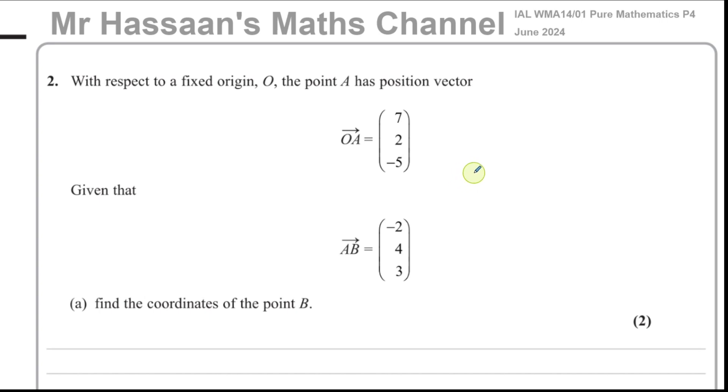We're told in this question about this vector. With respect to a fixed origin, the point A has position vector OA equals 7, 2, negative 5. Given that AB is the vector negative 2, 4, 3, find the coordinates of the point B.